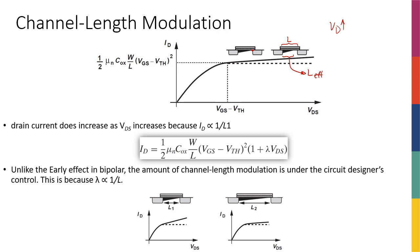As VD is going up, L_effective is actually decreasing. And L_effective is the length that I'm integrating over — we talked about this in the previous slide. So what happens is that when I'm increasing VDS, all that integration is still valid, but L_effective changes, meaning the length in the current expression becomes L minus some delta L — it's decreasing by a little bit.